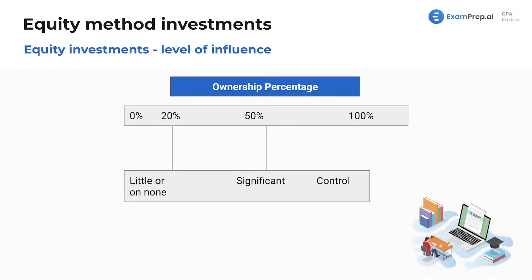This whole thing is a continuation of our fair value chapter. So when you have 0% to 20% of ownership of the company, that's little or no significant influence. 20% to 50% — if you own between 20% and 50% of a company and you have significant influence, then use the equity method.